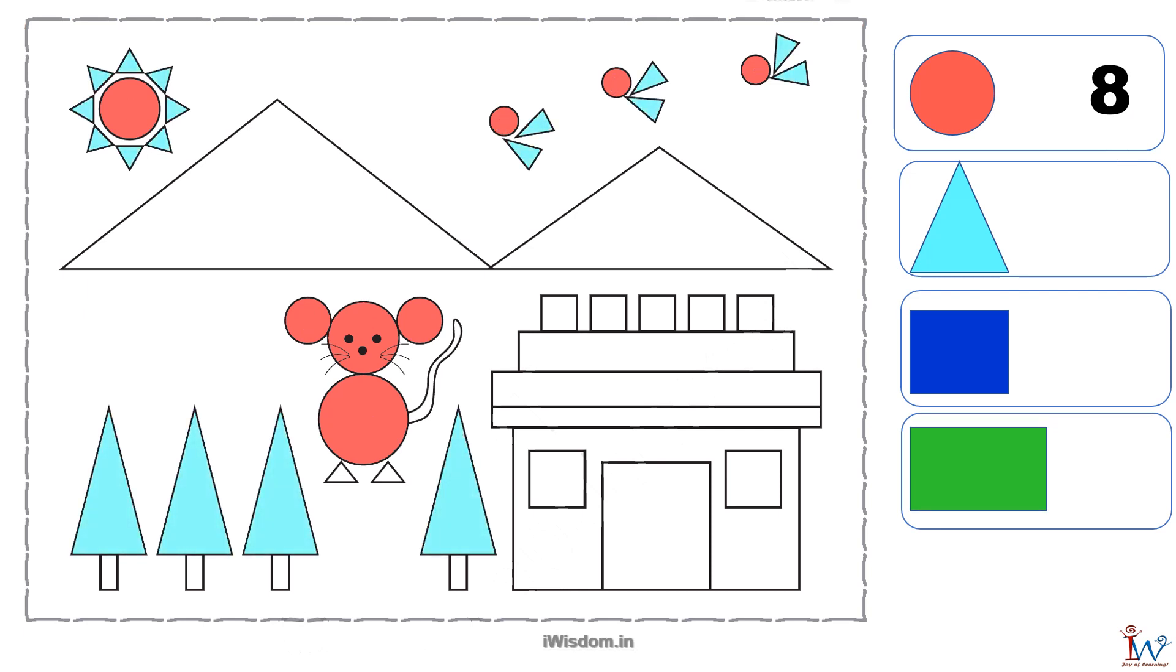I will count triangles. There are so many. Sun has one, two, three, four, five, six, seven and eight. Bird's body is also made of triangle.